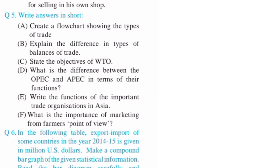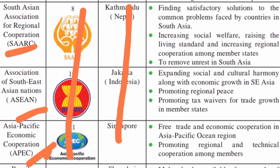Question five, part E: Write the functions of important trade organizations in Asia. The South Asian Association for Regional Cooperation, that is SAARC — under this topic, you have to write the relevant points. Find the satisfactory solution points and write them on page number 70.